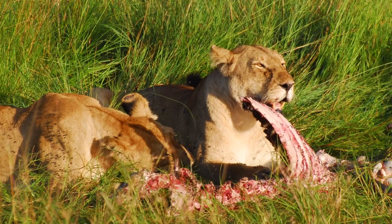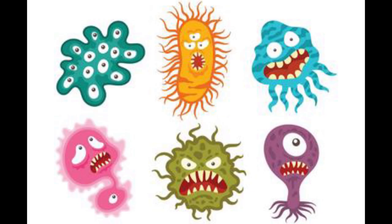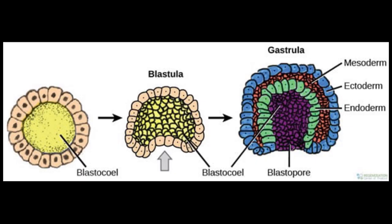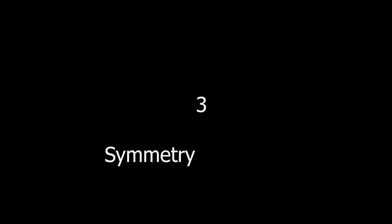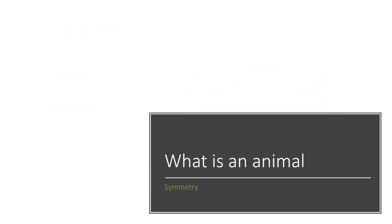Second, animals have germ layers — not the kind of germs that cause diseases, but actual germ layers derived from an embryo. These three germ layers include the ectoderm, the outermost layer that includes your skin and parts of your nervous system; the mesoderm, the middle layer that includes muscle cells, cardiac muscle, and red blood cells; and the endoderm, the innermost layer that includes your esophagus, stomach, and intestines.